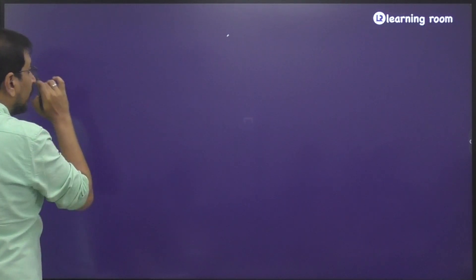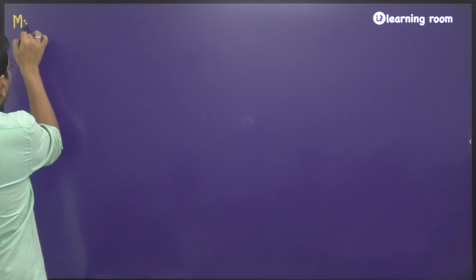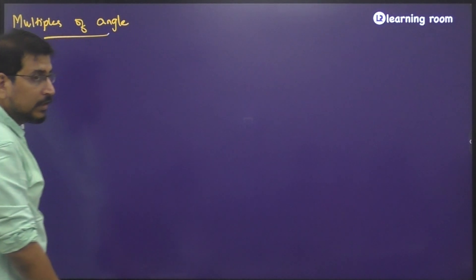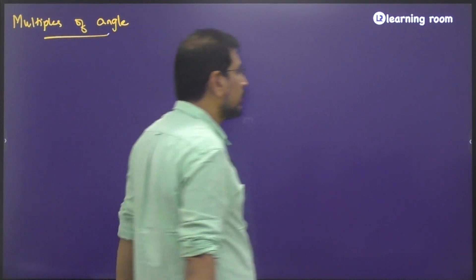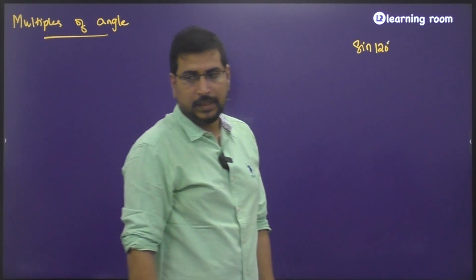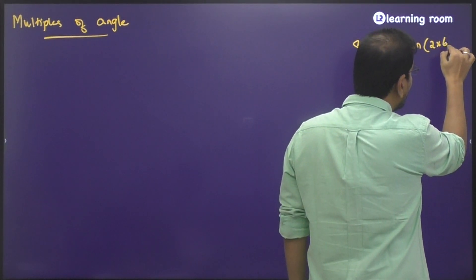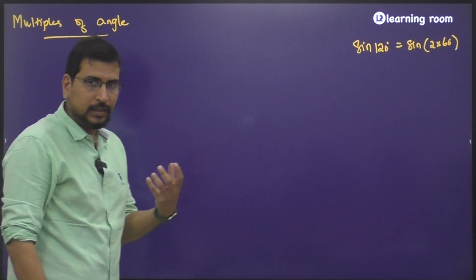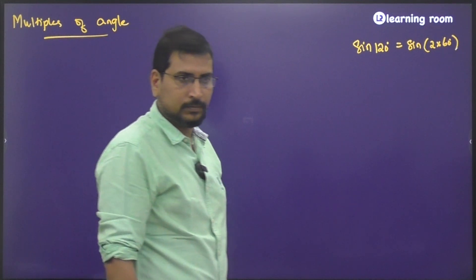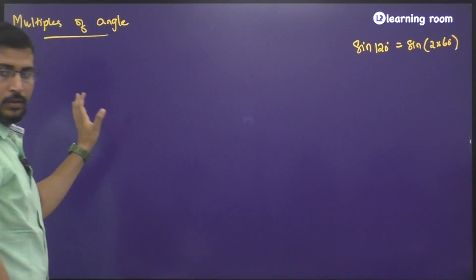If you observe, we have the multiples of angle. So we are going to see the trigonometric ratios for multiples of angles. For example, if I want sine 120 degrees, can I write this as sine of 2 into 60 degrees? So if I have a direct formula where I am able to relate sine 120 in terms of sine 60, I will be able to solve the problem faster. That is why we need to start developing some formula for the multiples of angles.